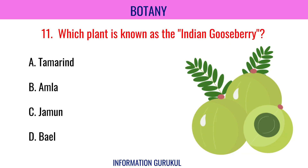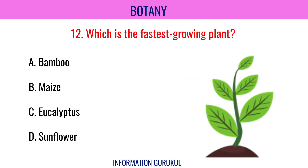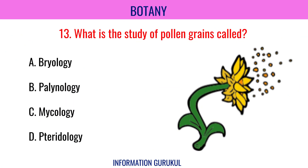Which plant is known as the Indian gooseberry? Amla. Which is the fastest growing plant? Bamboo. What is the study of pollen grains called? Palynology.